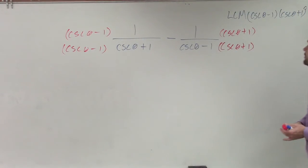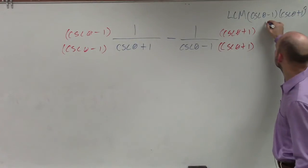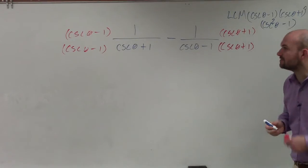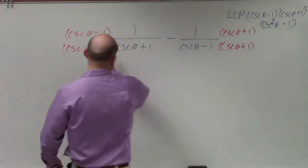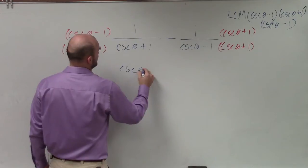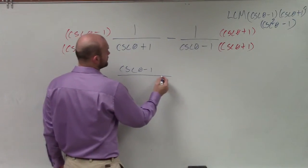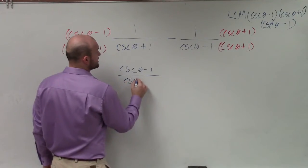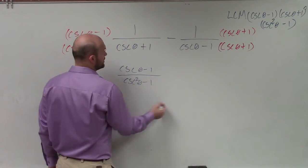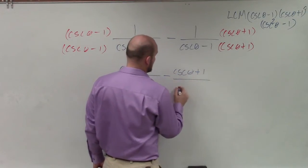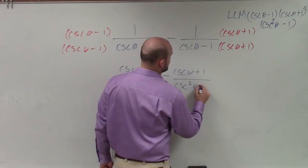All right. Now, we know that this is also a difference of two squares. So that's actually going to provide me with, when I multiply that out, I'm actually going to get cosecant squared of theta minus 1. So I can simplify that on top. So when I multiply this across, I have now cosecant of theta minus 1 over cosecant squared of theta minus 1, minus cosecant of theta plus 1 divided by cosecant squared of theta minus 1.